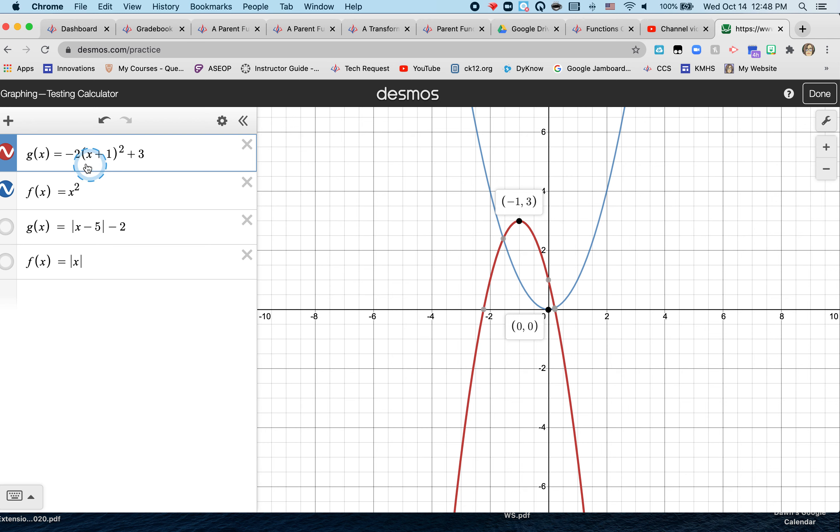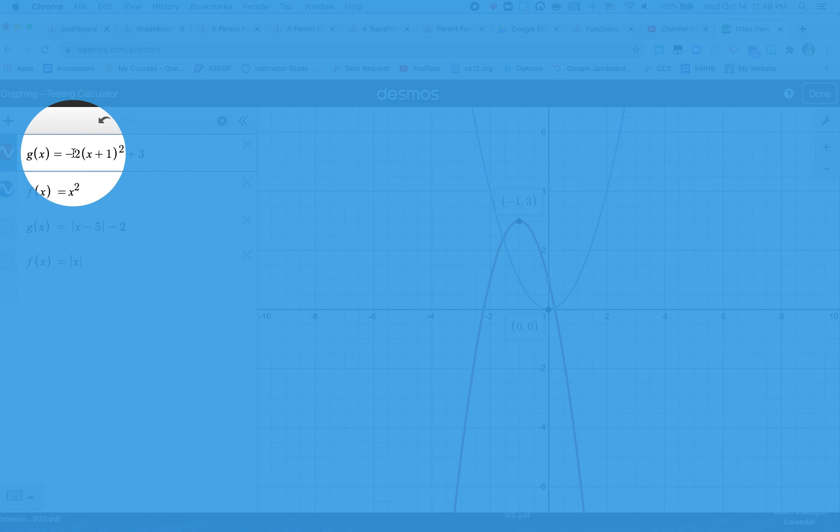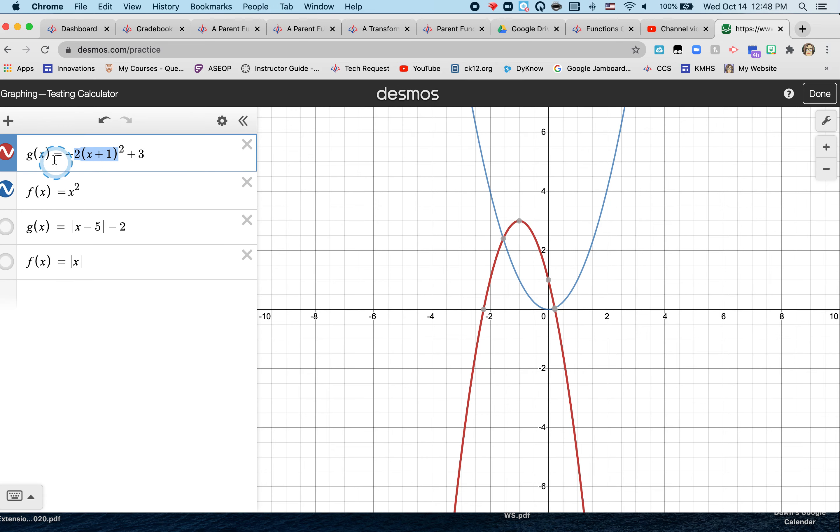So I've got one more to talk about, which is this 2 value right there. What that 2 does, just the 2, the 2 causes, that's your a, your a value is greater than 1. It causes your graph, if you can look, it is a little bit skinnier, a little bit slimmer, and I want to show you this.